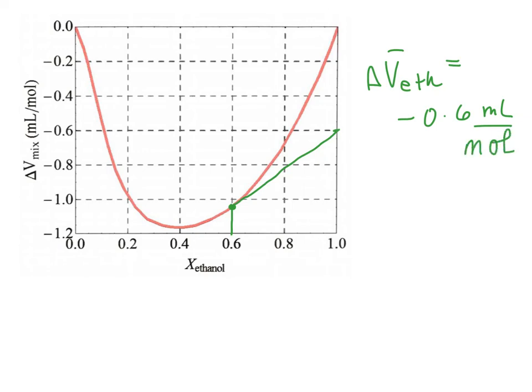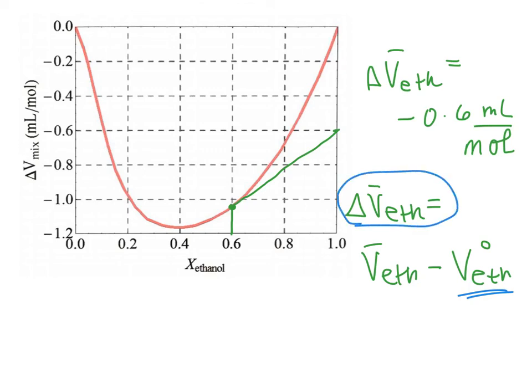And so we would find that delta V bar ethanol is negative 0.6 milliliters per mole. So our units are whatever they are on the y-axis. And so we can just remember that change in partial molar volume is the partial molar volume in the solution, minus the partial molar volume in the pure state. And so we can just write that like that. So as long as you know the molar volume, then if you find the change in the partial molar volume, you can easily go to the partial molar volume.